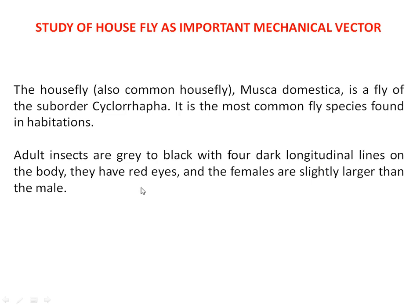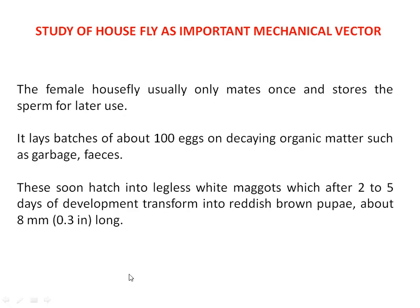They have red eyes as sensory structures, and the females are slightly larger than the males. The female housefly usually only mates once during its lifetime and stores the spermatozoa in the receptacle, where these stored sperm are used later on to fertilize the eggs. It lays batches of about 100 eggs on decaying organic matter such as garbage and feces.